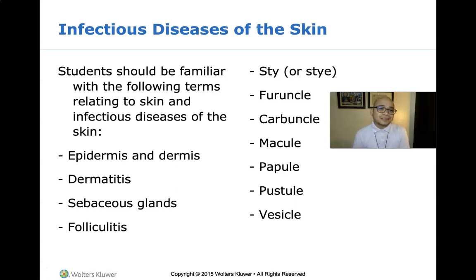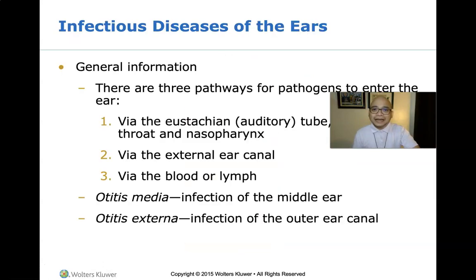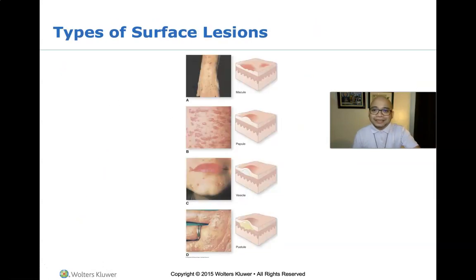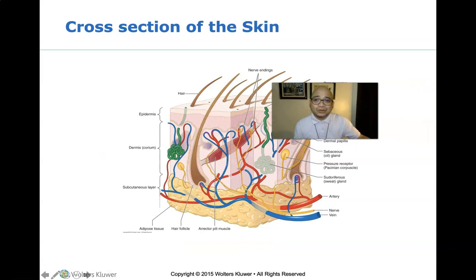We also have the terms furuncle, carbuncle, macule, papule, pustule, and vesicle. You have to be familiar first with the anatomy of the skin, which you have already learned in your anatomy and physiology class.